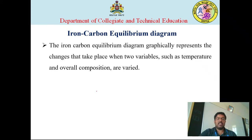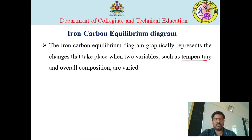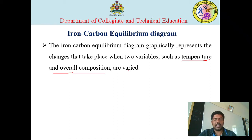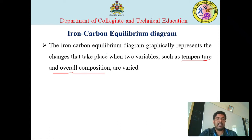Next is the iron-carbon equilibrium diagram, which is also a type of phase diagram. This diagram graphically represents the changes that take place due to two variables — temperature and overall composition — varying from 0 to the maximum temperature and from 0 to the maximum percentage of carbon. That is why it is known as the iron-carbon equilibrium diagram.